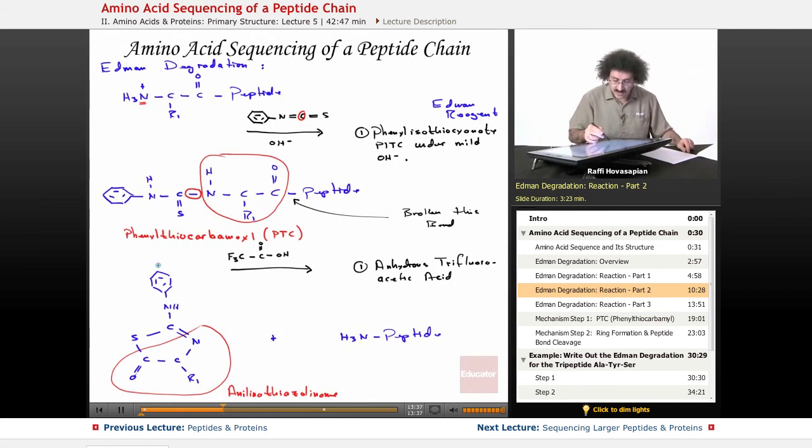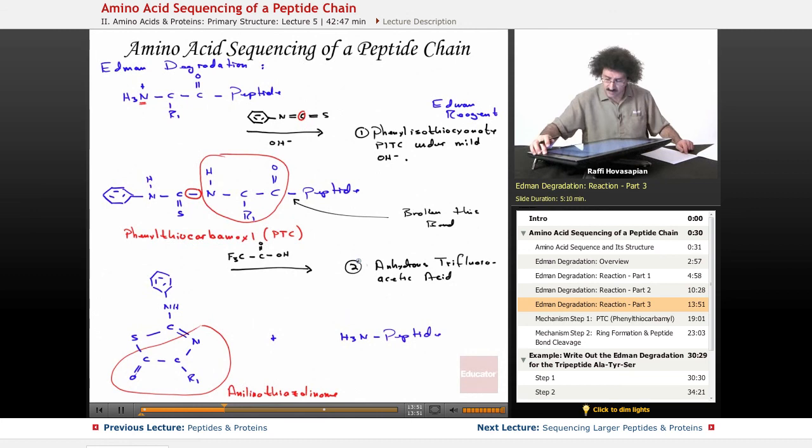Now we take the third step. This is not number one. This is two, not number one. Number one was that. Sorry about that. This is step two of the Edman degradation. Now we're going to go to step three of the Edman degradation. So let me move on to the next page.